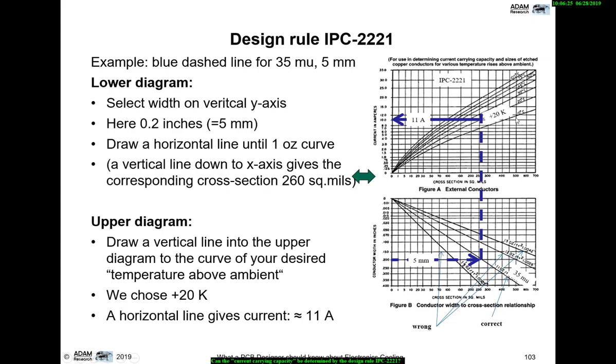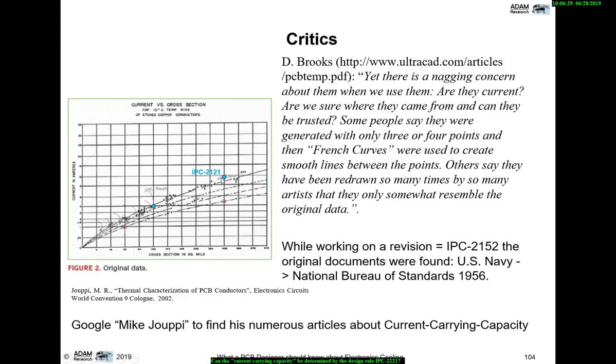If we go back to the 10K line and select few data points, those are the ones in blue. So from the bunch of data, the IPC selected the top line and took the points into the 2221. That's a typo. Google for Mike Juppie to find more of his articles about current carrying capacity, either historic or the new ones.